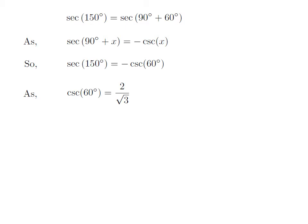We know the value of cosecant of 60 degrees is equal to 2 over square root of 3. So, the value of secant of 150 degrees is equal to minus 2 over square root of 3.